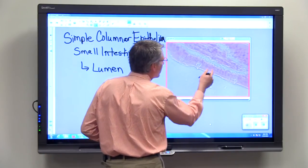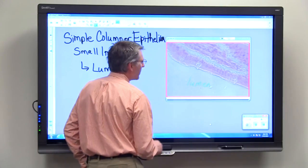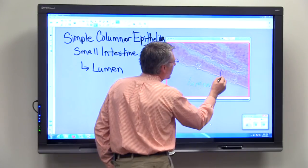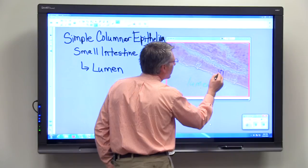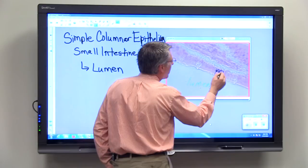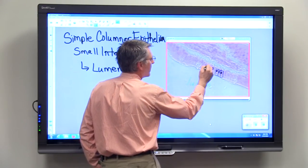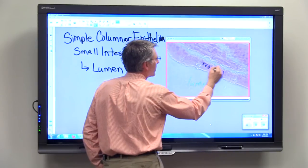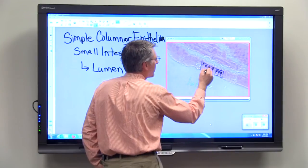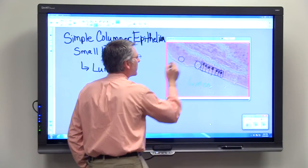This is the lumen. I want you to notice here in particular that when we look at these cells, the nuclei are all found in the same layer. Here's another nucleus, here's a nucleus, here's a nucleus, here's a nucleus. We could separate these cells sort of like this. Here's a goblet cell that we looked at, and here's another goblet cell.